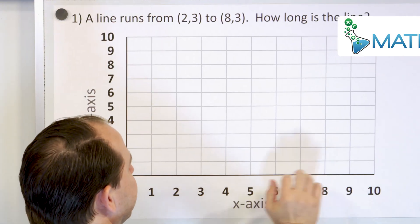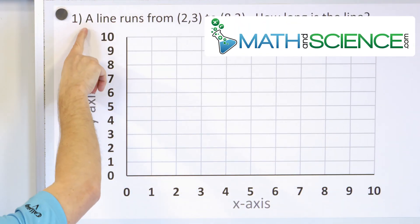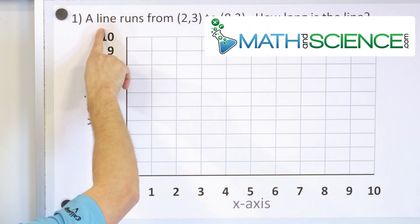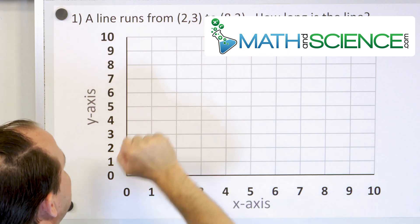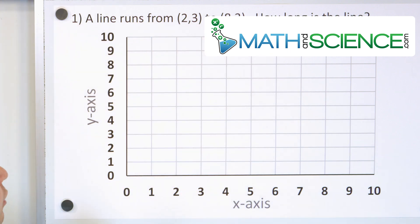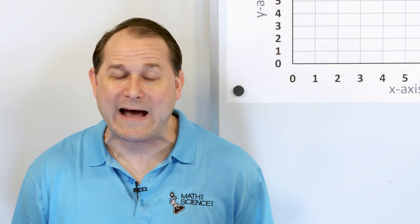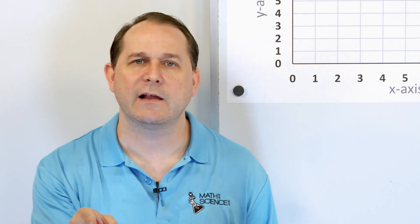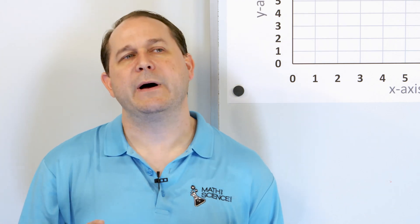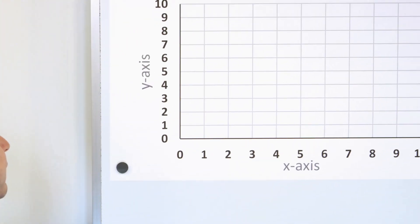Here we have our coordinate plane, as we always have here, and we have the question: a line runs from 2,3 to 8,3. How long is the line? Now, if you don't draw a graph of this, it's very hard to just look at that and say I know how long that line is. But by plotting it, we can see what we're trying to do here.